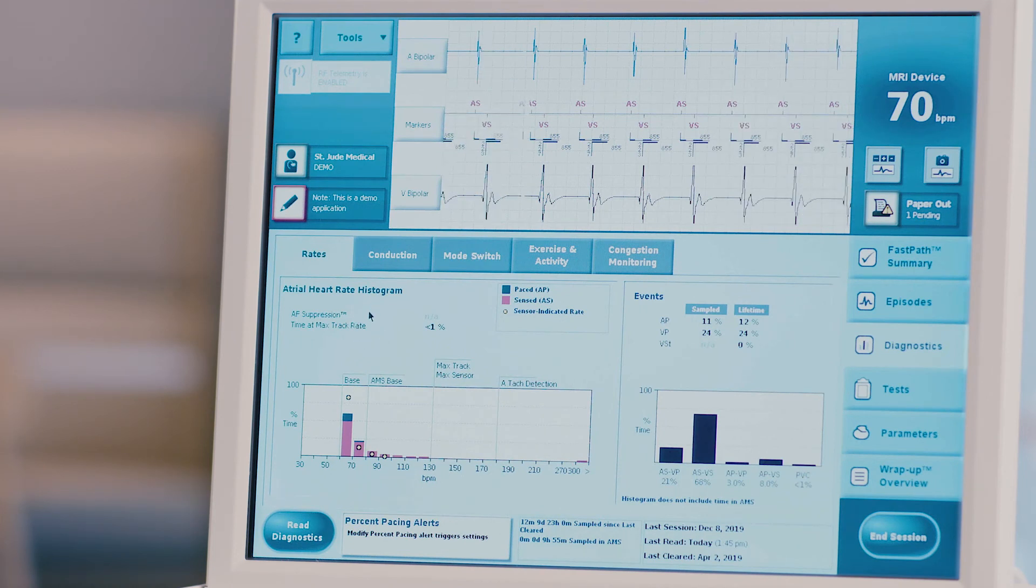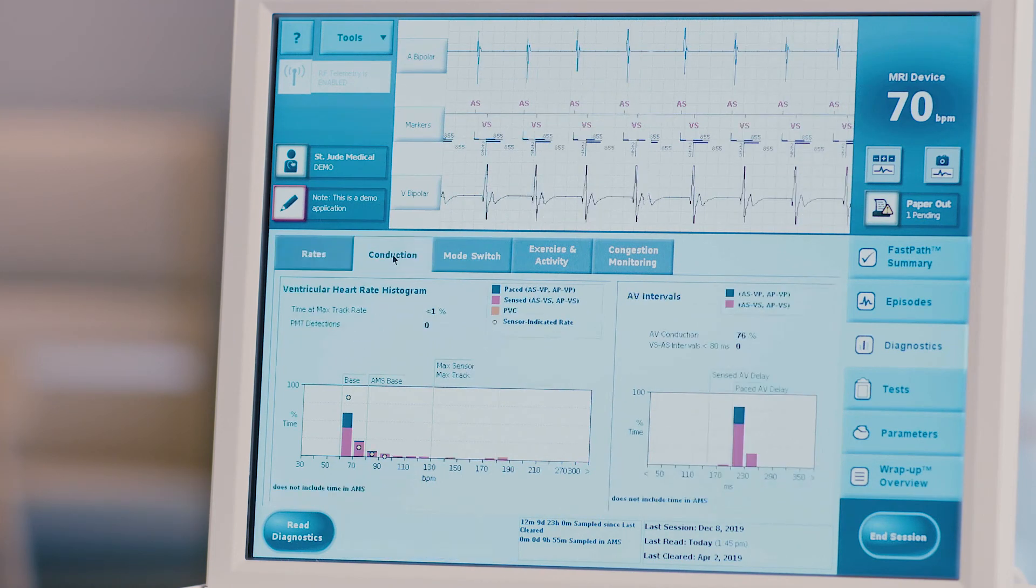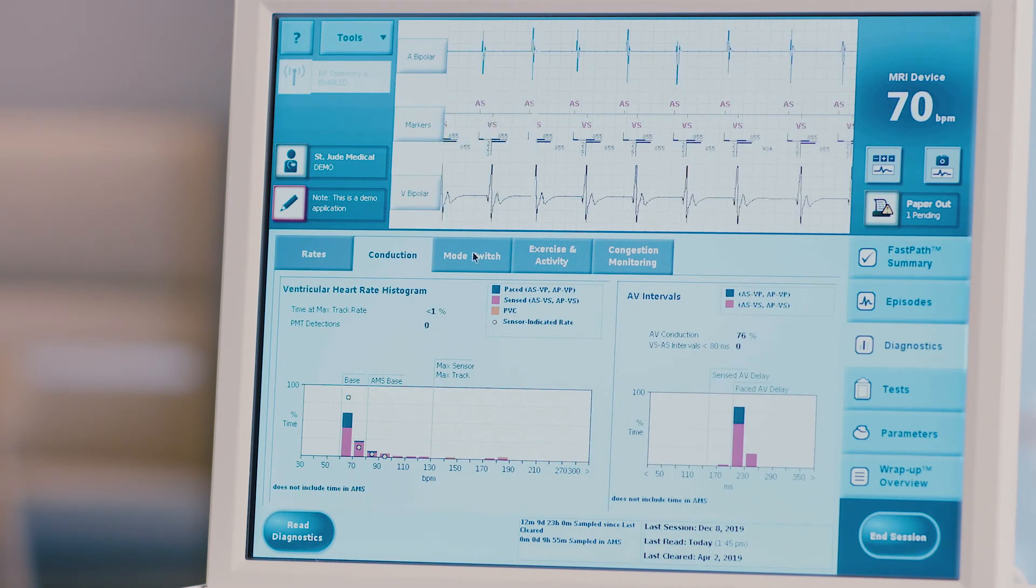Press the conduction tab at the top of the screen. Evaluate the ventricular heart rate histogram. Press the mode switch tab at the top of the screen.